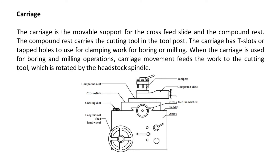The carriage is the movable support for the cross-feed slide and the compound rest. The compound rest carries the cutting tool in the tool post. The carriage has T-slots or tapped holes to use for clamping work for boring or milling. When the carriage is used for boring and milling operations, carriage movement feeds the work to the cutting tool, which is rotated by the headstock spindle.